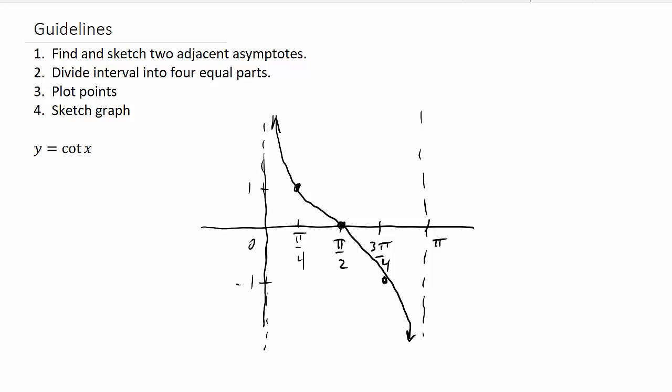I've got some examples I'm going to do graphing a cotangent function. Each example will have its own video, so be sure to check them all out. They'll be like a normal one, and then something like cotangent of 3x or 5x. And then we'll have one where it shifts left or right, and then another one where it shifts left or right and up and down.